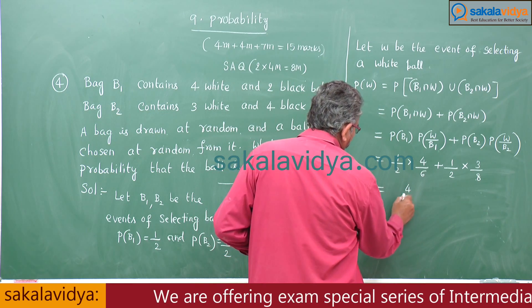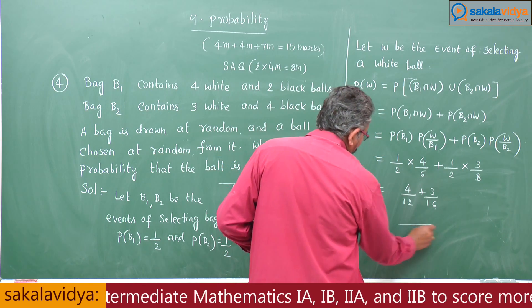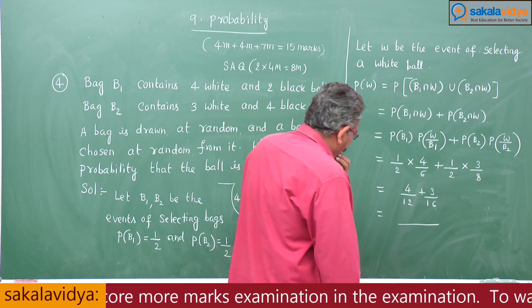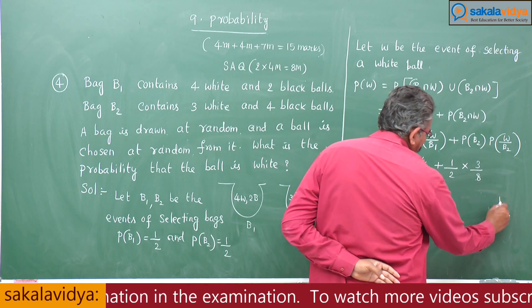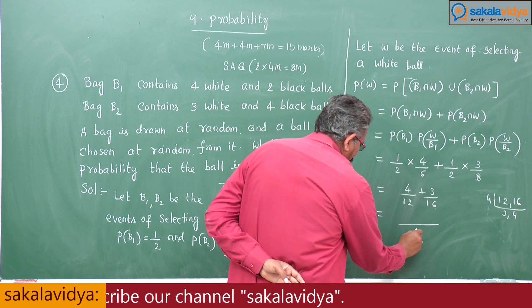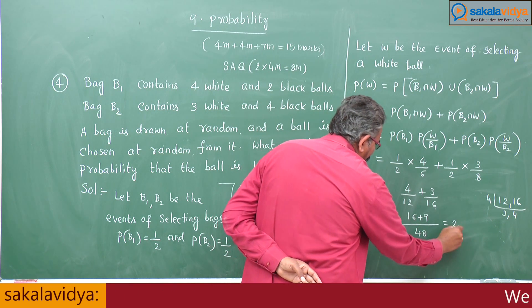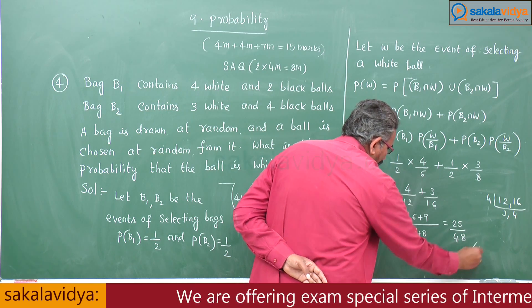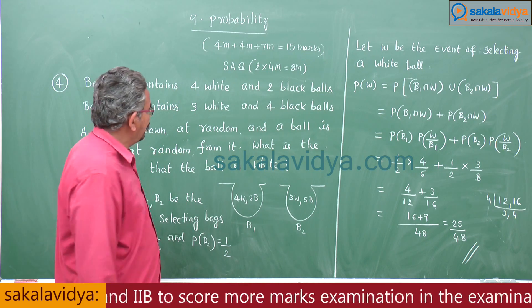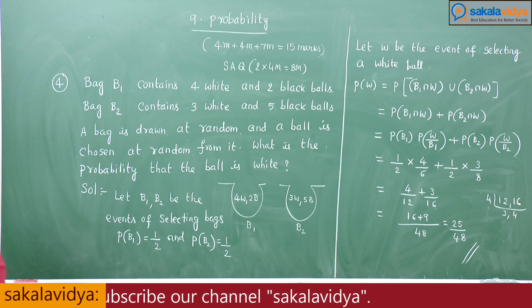This gives 4/12 + 3/16. The LCM of 12 and 16 is 48. So we get 16/48 + 9/48 = 25/48. This is the answer. Note: in this problem, if you take 5 black balls instead of 4 in B2, that adjustment applies.